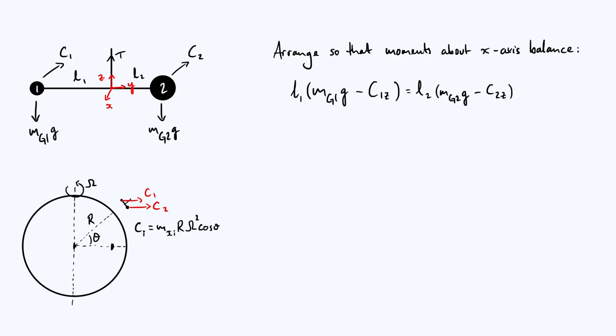So given that we've said that the upwards component is the Z component, we can write that as minus C1Z. We only care about the Z component when we're taking moments about the x-axis. And then for the same reasons, our right-hand side is going to be L2 multiplied by the weight of object 2 minus the Z component of the centrifugal force acting on object 2. Basically, because the x and y components of the centrifugal forces don't produce, they don't have a perpendicular distance to the x-axis, and they don't tend to cause a rotation about the x-axis. So we can rearrange this. Let me write this as a length ratio. L1 over L2 is going to be MG2 times G minus C2Z, and then divided by the equivalent for object 1.